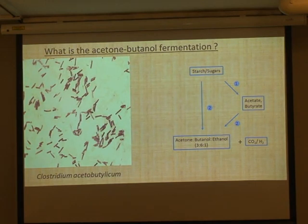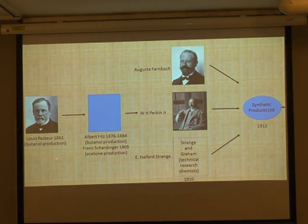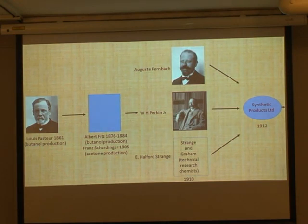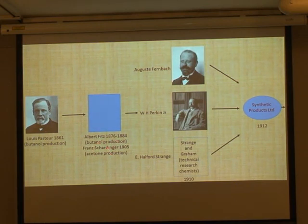The fermentation is a really active, bubbling process. The history of the fermentation goes right back to the early days of microbiology. Pasteur first described butanol production by organisms, but not in exactly the way that the acetone-butanol fermentation is conducted. Then Fitz and Franz Schardinger identified clostridia - though they didn't call them clostridia then - that produced butanol and acetone.